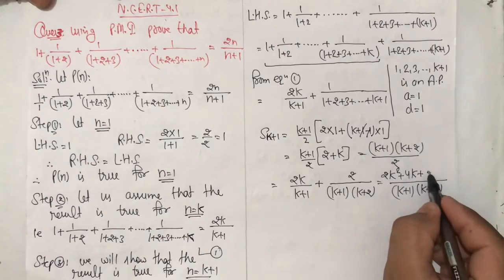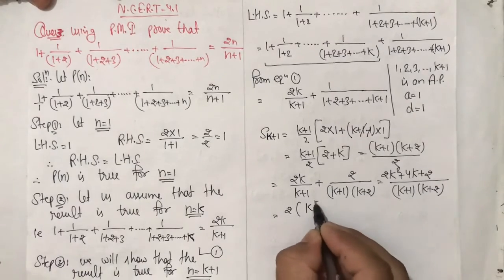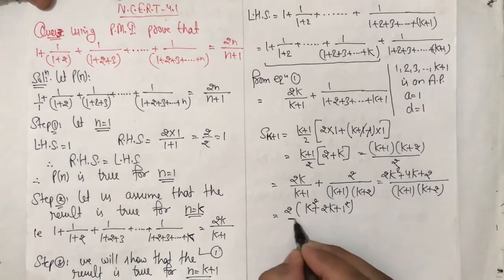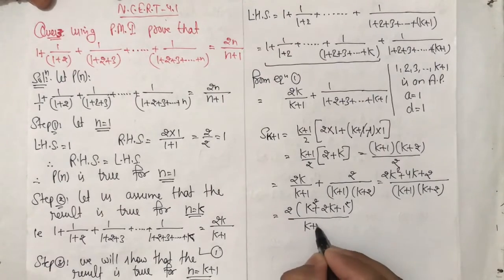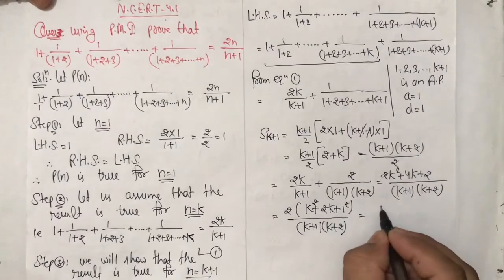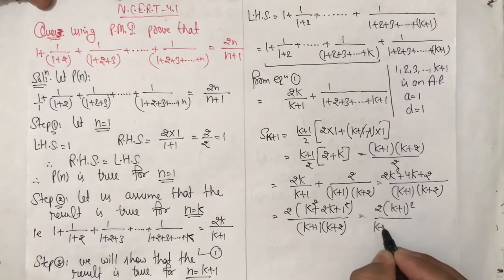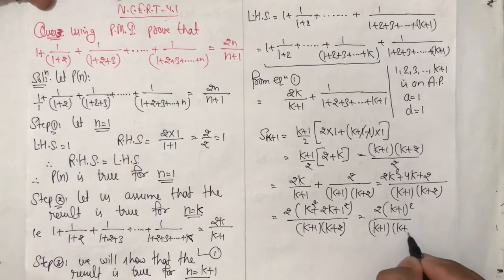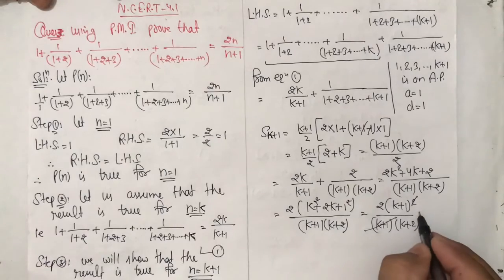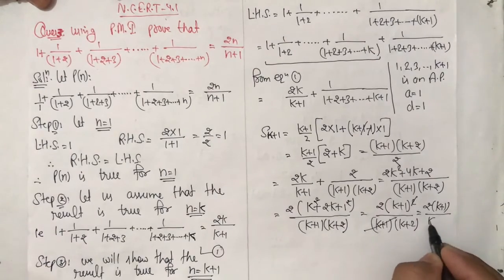Adding the second term's numerator 2, we get 2k squared plus 4k plus 2. Taking 2 as common from the numerator: 2(k squared plus 2k plus 1), which equals 2(k plus 1) squared, divided by (k plus 1)(k plus 2). One (k plus 1) cancels, giving 2(k plus 1) divided by (k plus 2).